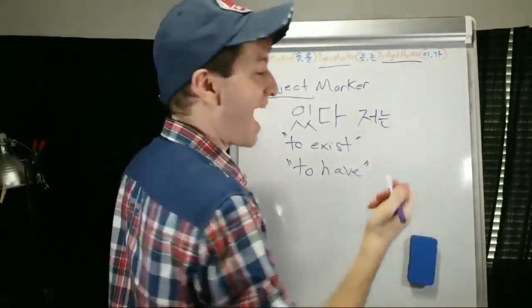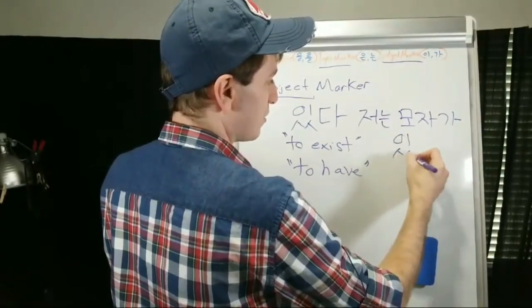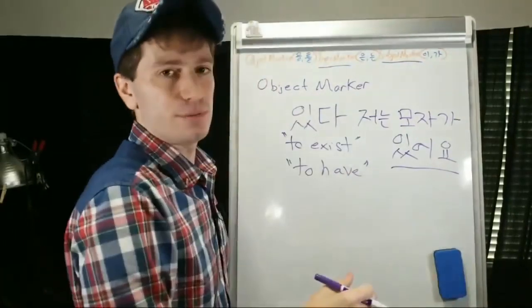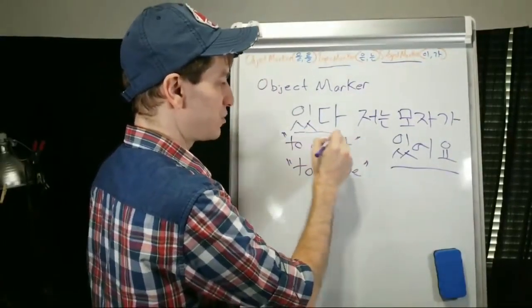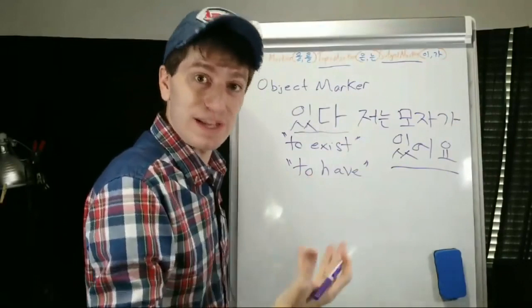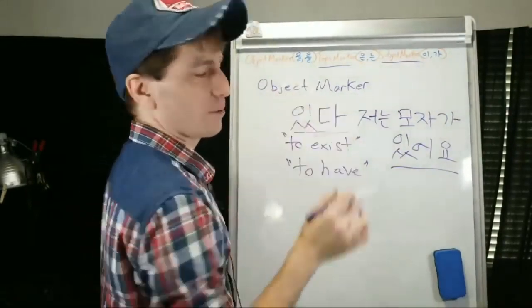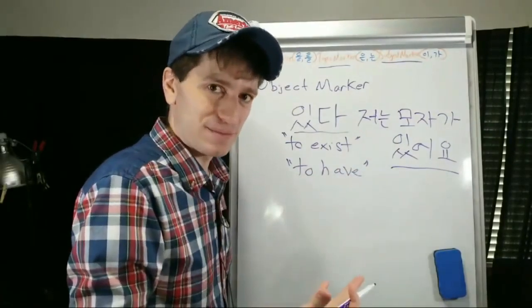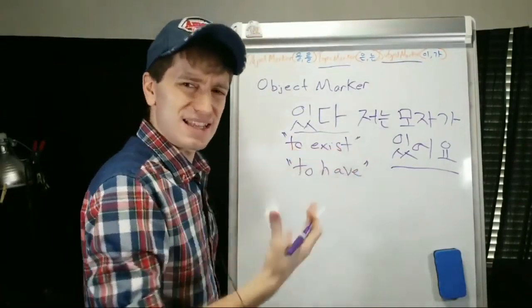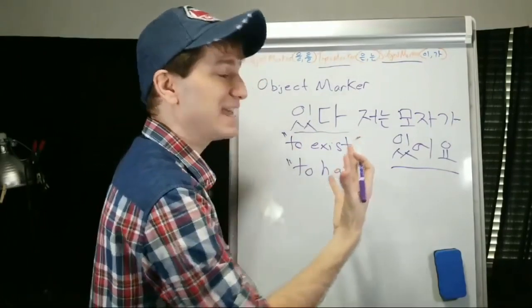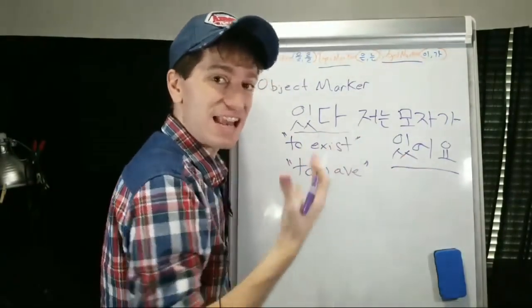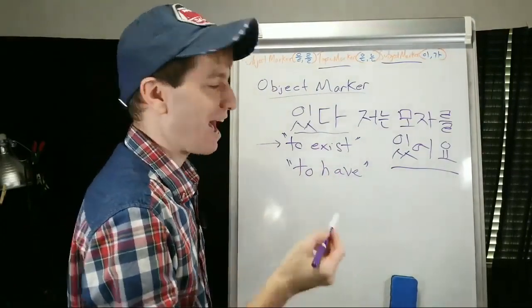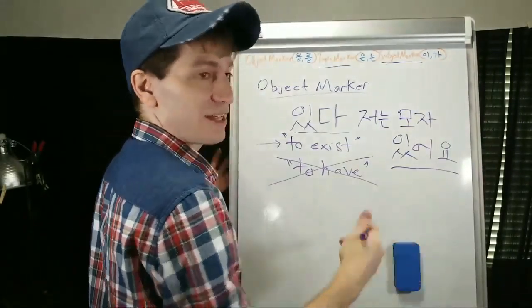You might say 저는 모자가 있어요 — 'I have a hat.' The object marker is only used when you have an action verb doing something TO something. 있다 means to exist — are you 'existing' a hat? Or does a hat just exist? 있다 only means to exist; it does not literally mean 'to have,' that's just how it's used. So 저는 모자가 있어요 literally means 'as for me, a hat exists.'